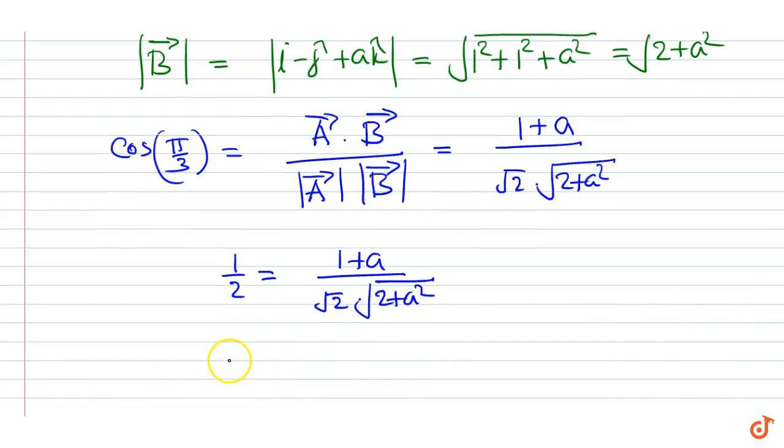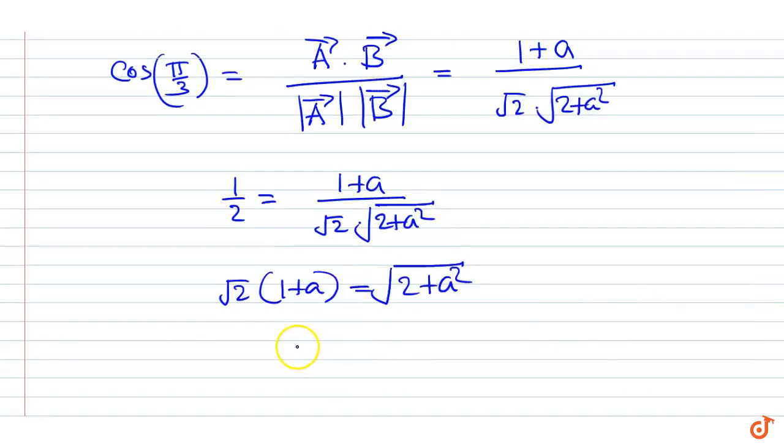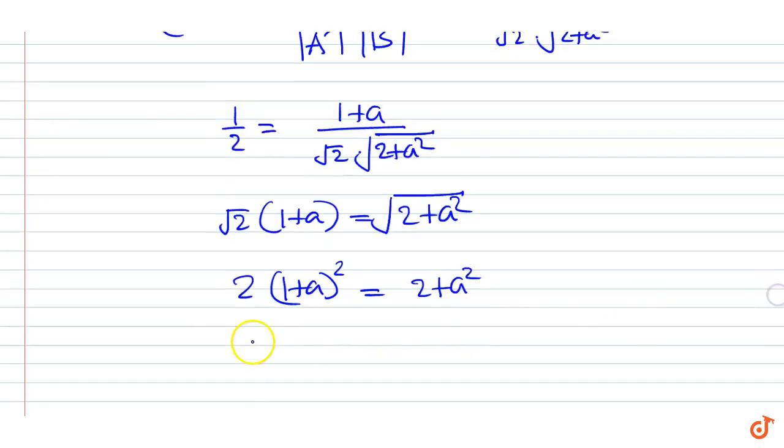Cross multiplying we get root 2 into root of 1 plus 2a plus a squared equals 2 plus a squared, or we can write...